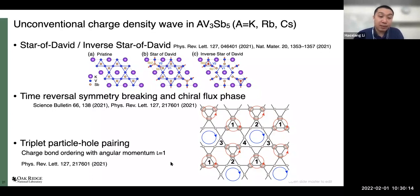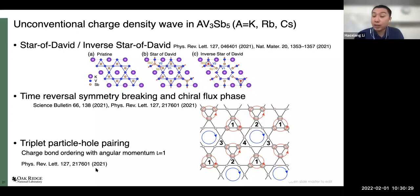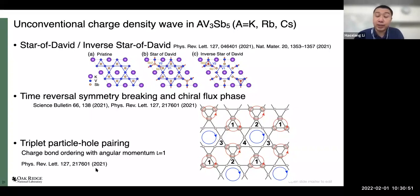One theory proposal involves a charge bond ordering with non-trivial angular momentum for the particle-hole pairing, since CDW arises from particle-hole pairing on the Fermi surface generating Fermi surface instability — as opposed to electron-electron pairing for superconductivity. This CDW state is then proposed to have P-wave particle-hole pairing, similar to P-wave superconductivity — but this is not directly confirmed by experiment yet. It's part of the theoretical proposal inside this material.